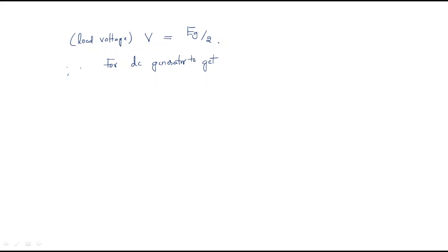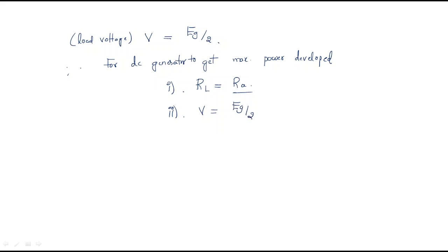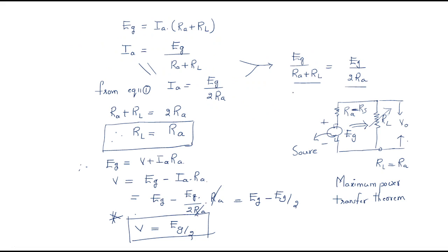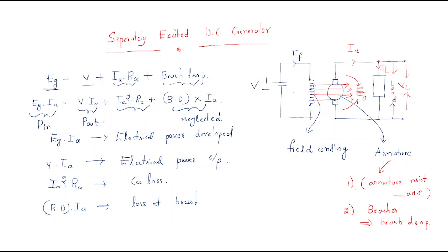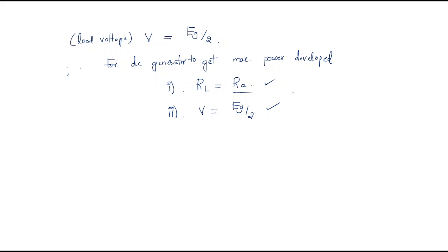To get maximum power developed at the output, the first condition is load resistance must equal the source resistance, which is the armature resistance. The second condition is the load voltage must equal EG by 2. If this condition is satisfied, the other condition is automatically satisfied. This is about the operation of the separately excited DC generator and the maximum output power developed.